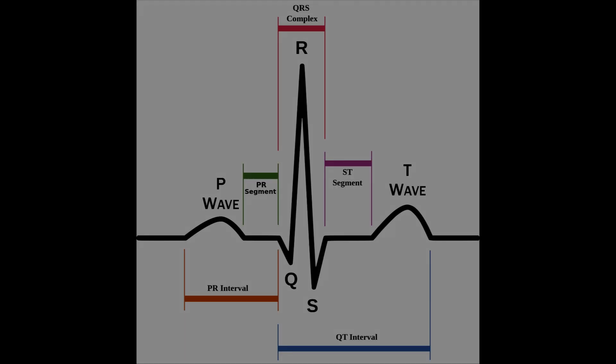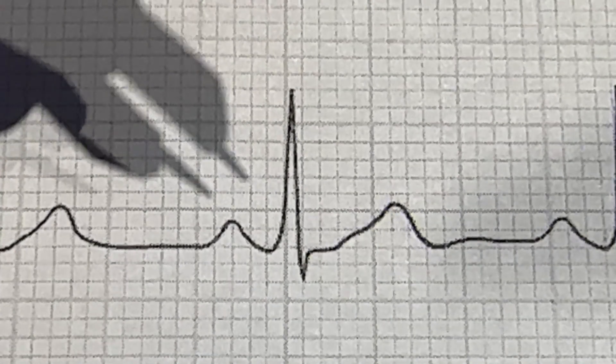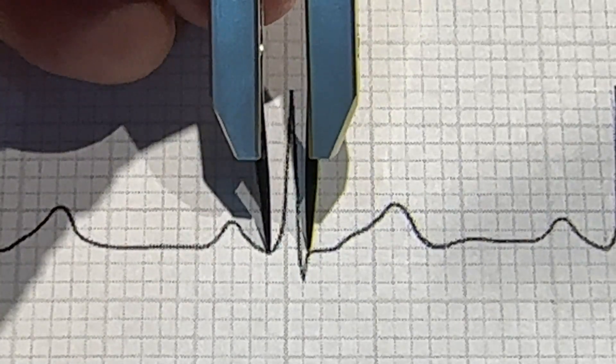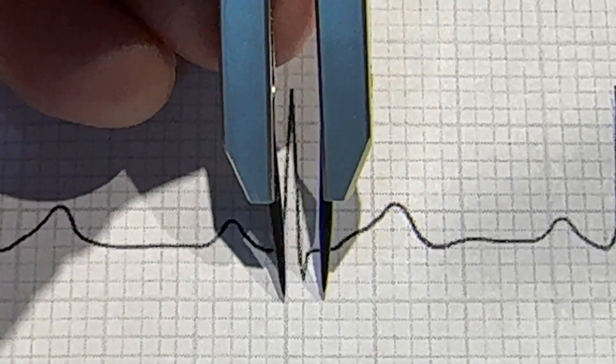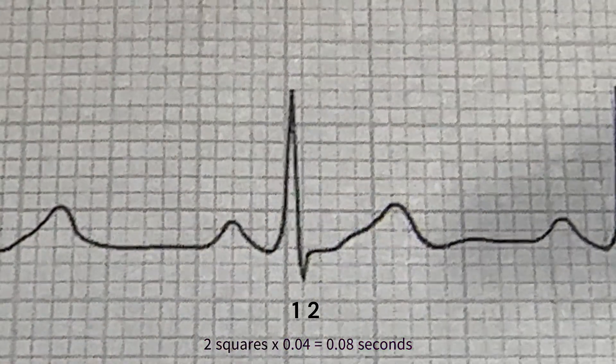How to measure the QRS complex? To measure the QRS complex, you need to locate the beginning of the Q wave and the end of the S wave. Using an EKG caliper, place one tip of the EKG caliper at the beginning of the Q wave, then place the other end of the EKG caliper at the end of the S wave, also known as the J point.